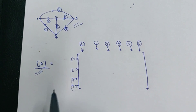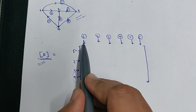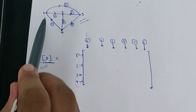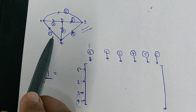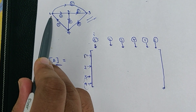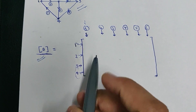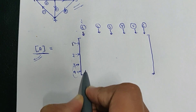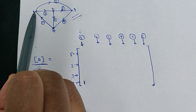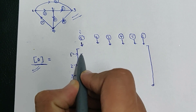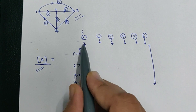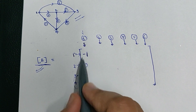This is the structure of the incidence matrix. Now I have drawn the structure — how to write the incidence matrix. First we will consider branch one. In branch one, the current is flowing from node 4 to node 1. The node from which it is flowing will have a value of +1. The node to which the current is flowing will have a value of -1, and all other nodes will have a value of zero because they have no involvement with branch one.